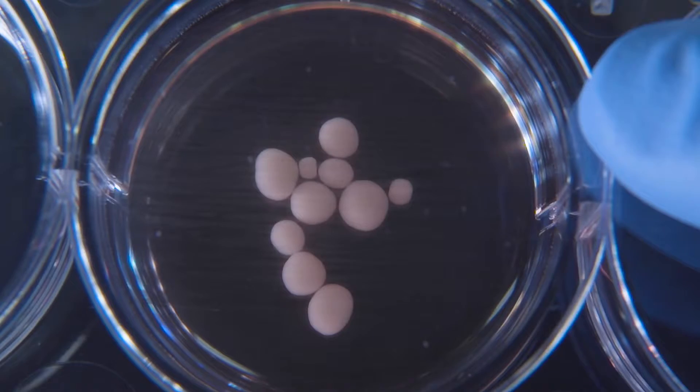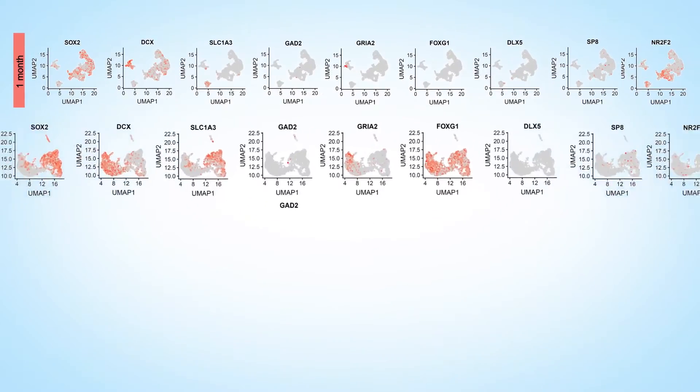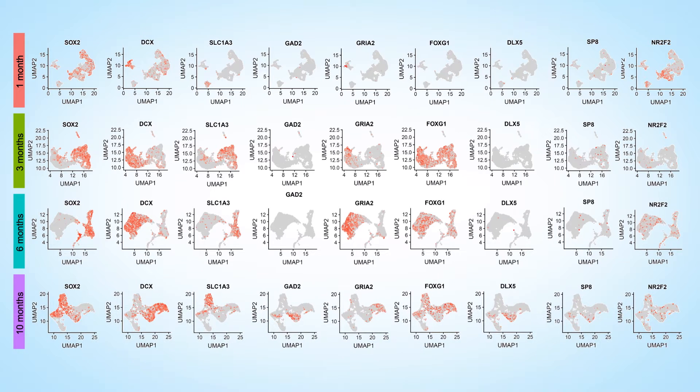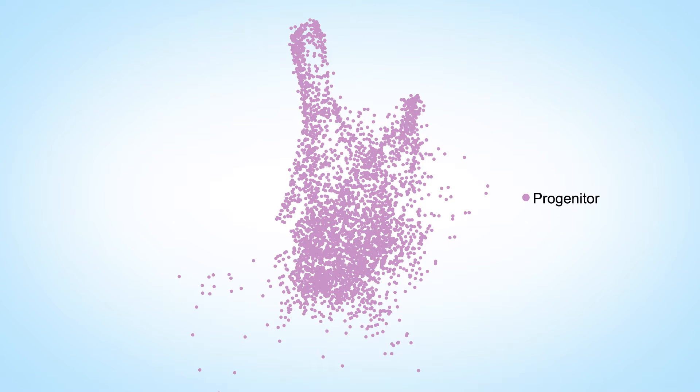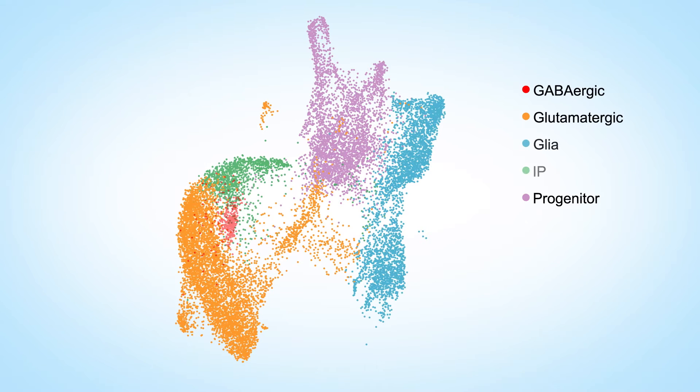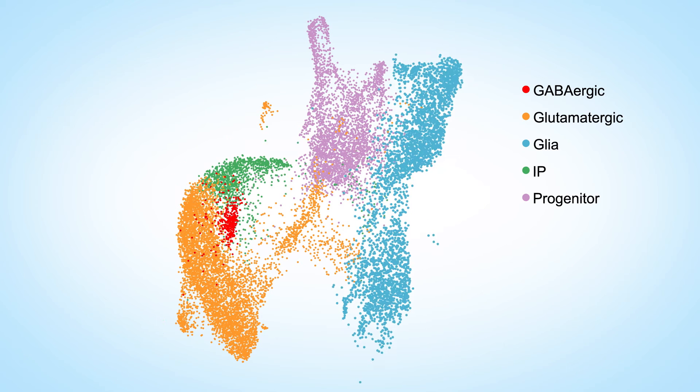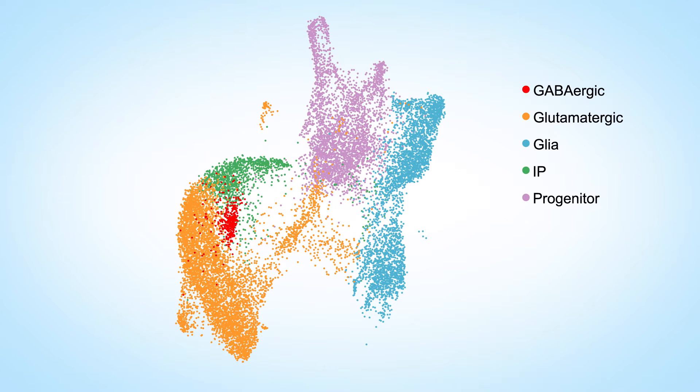That's what motivated us to further investigate what was going on. The researchers performed single-cell analyses on the organoids, looking at gene expression in nearly 20,000 cells to confirm the cell types necessary to make a functioning network. They verified the presence of neural progenitor cells and their subsequent differentiation into four other classes of neurons as the organoids matured: intermediate progenitors, glial cells, and both glutamatergic and GABAergic neurons, which are critical for the production and transmission of neural signals.